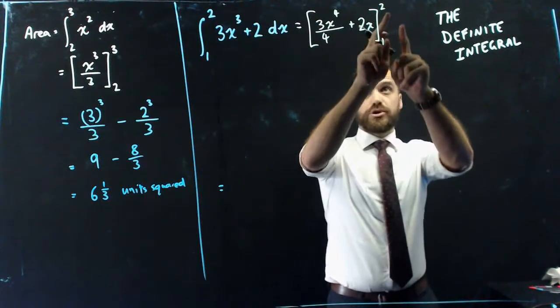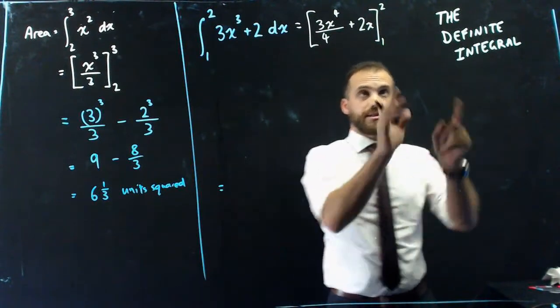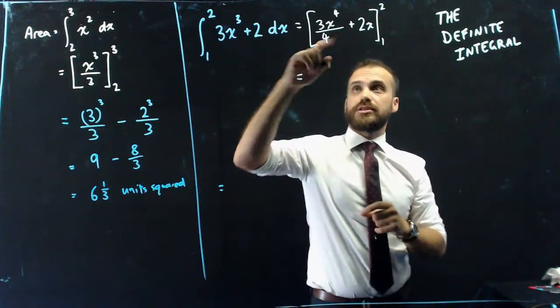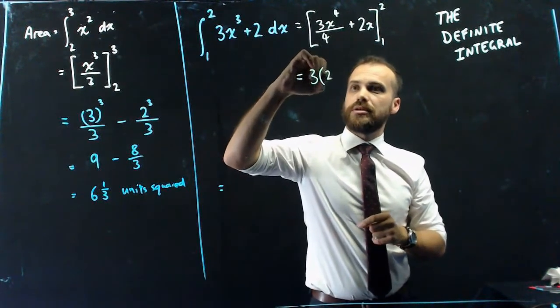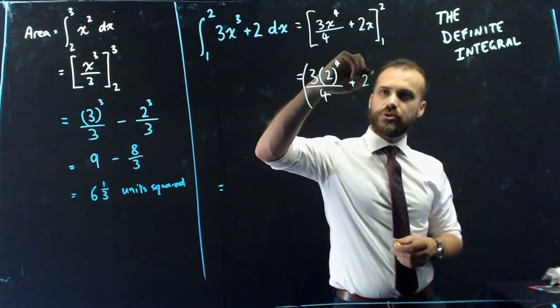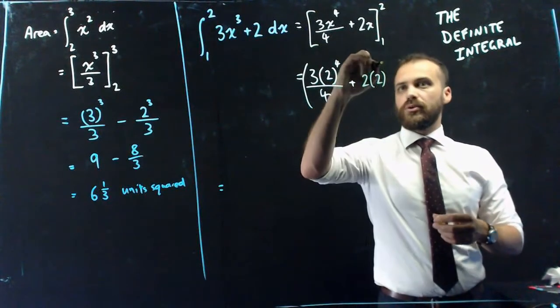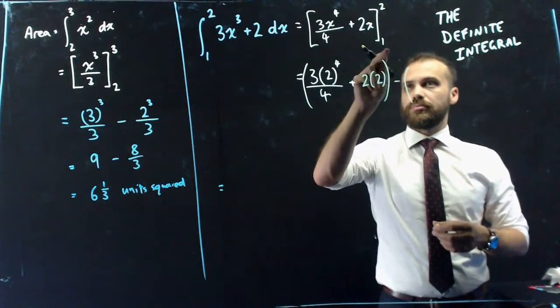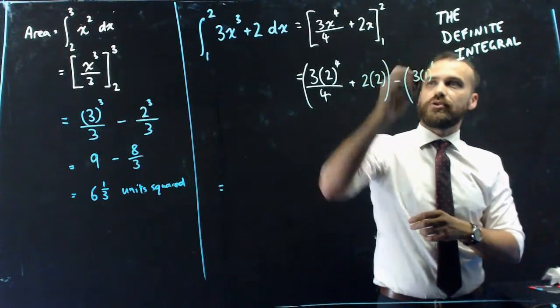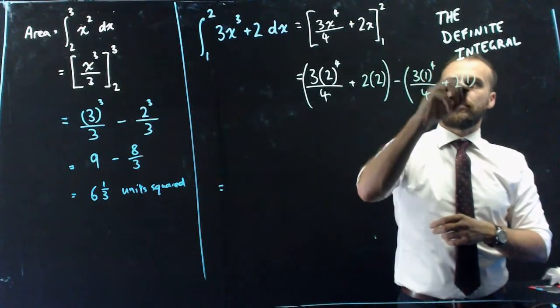Okay. And then we sub 2 into the thing in the brackets or the function in the brackets minus sub 1 into the thing in the brackets. So let's do our 2 first. So subbing 2 in, we get 3, 2 to the power of 4 over 4, plus 2 times 2, subbing the 2 into there. And then all of that, we're going to subtract, subbing 1 into the equation. So 3 times 1 to the 4 over 4 plus 2 times 1.